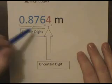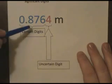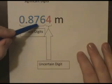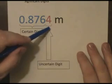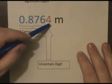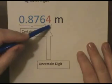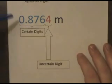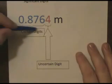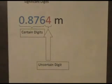So reasonable people using the same measuring device would agree that this measurement was 8, 7, and 6, and then two people might disagree on whether or not that last estimated digit is actually a 4 or not. Nonetheless, all of these numbers combined make up the significant digits within a measurement.